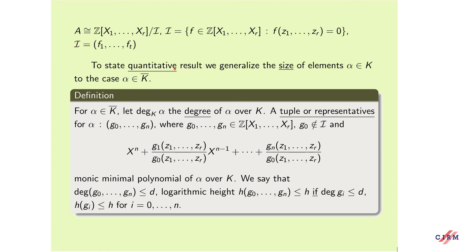To state the quantitative result, we have to generalize the size of elements alpha that are algebraic over K. For an algebraic element over K, we denote by [K(alpha):K] the degree of alpha over K. A tuple of representatives for alpha is a tuple with entries in the polynomial ring such that this is the monic minimal polynomial of alpha over K. We say that the degree of this tuple is at most d and the logarithmic height is at most h if all entries have degree at most d and height at most h.